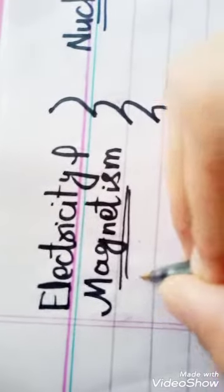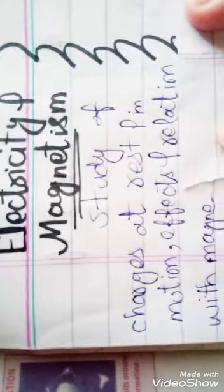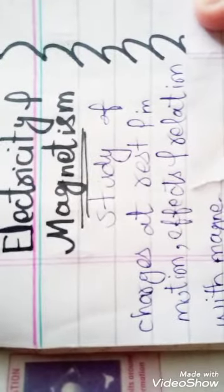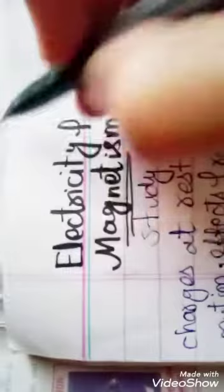physics which deals with the study of charges at rest and in motion, its effects, and the relationship with magnetism. This is called electricity and magnetism. It means electricity and magnetism discuss the motion of